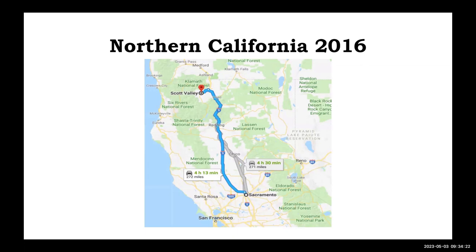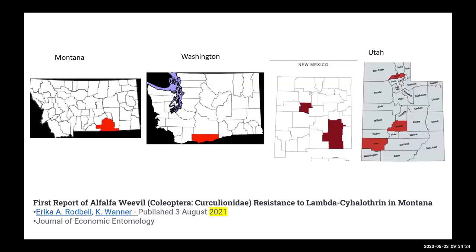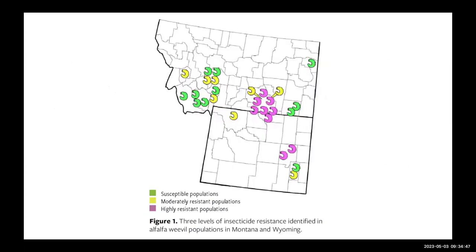We had reports after that from other northern areas and also from Canada, Alberta, and others. Just in 2020 and early 2021 we had a publication with colleagues in Montana about local populations in certain western states — Montana, Washington, Utah, and New Mexico — where populations are resistant to many of these pyrethroids.